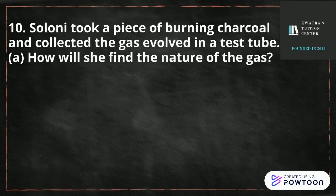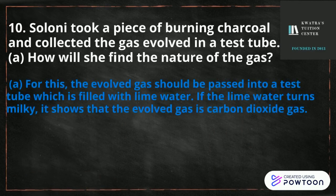Question number 10 is: Salone took a piece of burning charcoal and collected the gas evolved in a test tube. How will she find the nature of the gas? For this, she needs to take a test tube filled with lime water. If the lime water turns milky, it shows that the evolved gas is carbon dioxide.